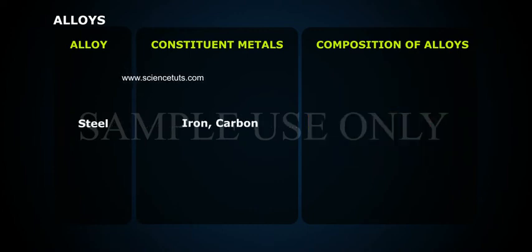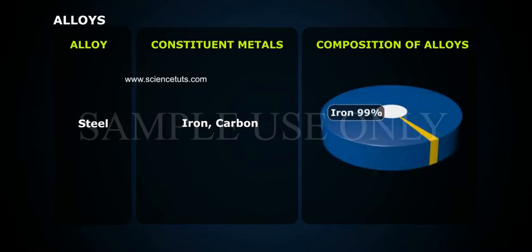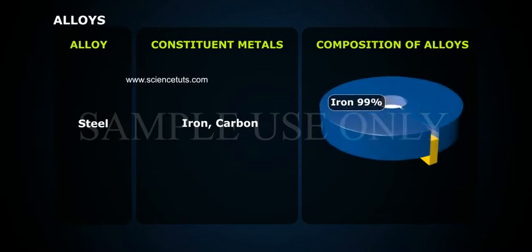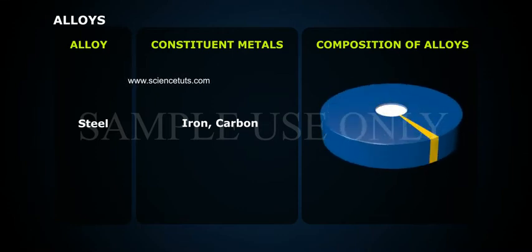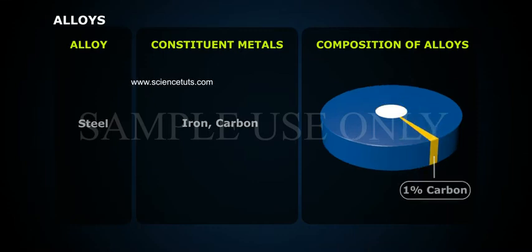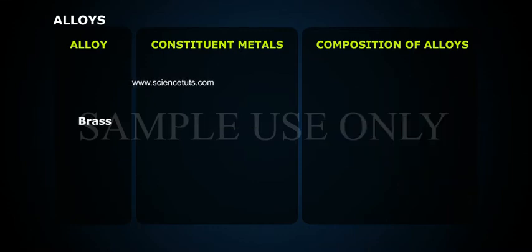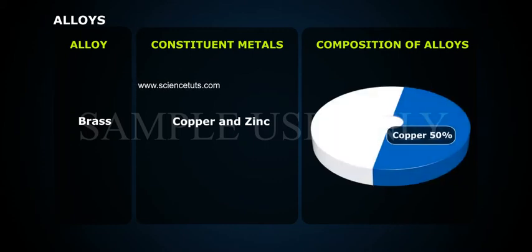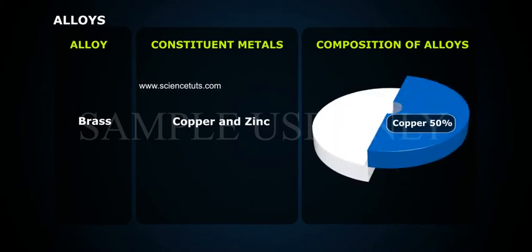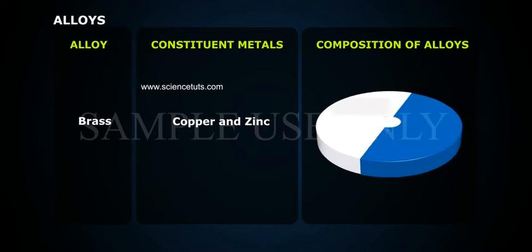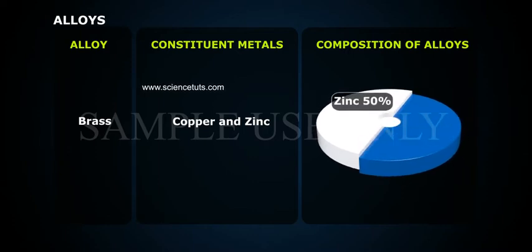Steel is composed of iron 99% and carbon 1%. Brass is composed of copper and zinc — copper with up to 50% and zinc 50%.